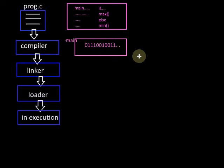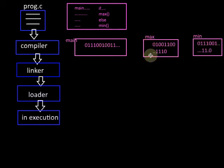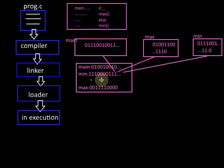Hence they are called undefined external symbols. Next comes the task of the linker. The linker will resolve those undefined external symbols, locate their addresses, and thereby locate their binary code or object code. Finally, the linker will link these object codes to the main object code and create one single linked object code, where the binary codes for all the modules are combined together.